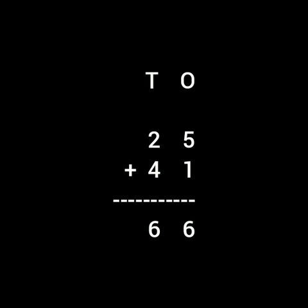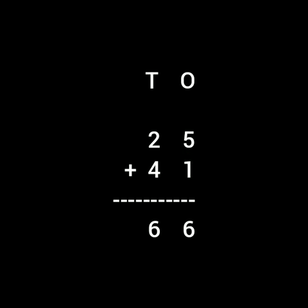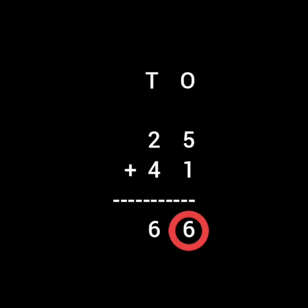So let us count 5 plus 1. On one hand you have to take out 5 fingers, and on the other hand 1 finger. Let us count them together: 1, 2, 3, 4, 5, 6. So you have to write 6 in the ones column.